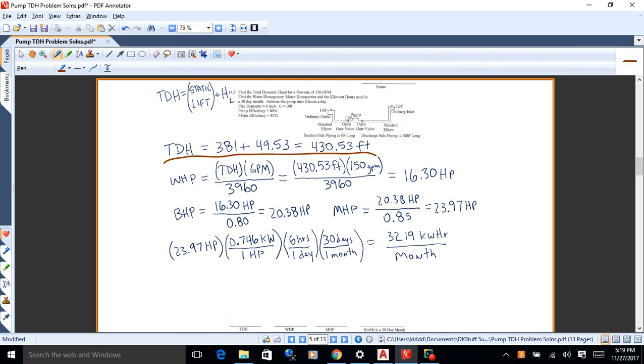From there, you can get horsepower. Horsepower for water horsepower is TDH times GPM over 39.60. So you can run those numbers and get 16.3 horsepower that's put to the water. You can then divide the efficiencies out and get to the brake horsepower coming out of the motor. Divide the next efficiency out and we'll get the motor horsepower coming into the motor and that's 23.97. You can then take that number, convert it into kilowatts. It runs six hours a day. We'll assume 30 days in a month. So we can multiply those numbers together. And what we'll get is 3,219 kilowatt hours per month.